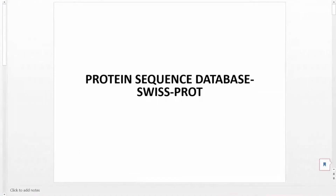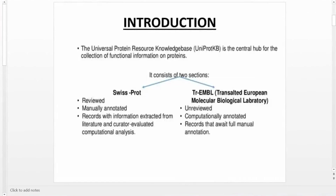A protein sequence database is a database that contains information regarding protein sequences. Swiss-Prot is one example of a protein sequence database. Swiss-Prot is part of UniProtKB, which is a central hub for a collection of functional information on proteins. Swiss-Prot is a reviewed, manually annotated database containing records with information extracted from the literature and curator-evaluated computational analysis.